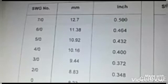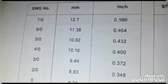7 by 0: 2.7, 0.5, 0.6. 6 by 0: 11.38, 0.464.